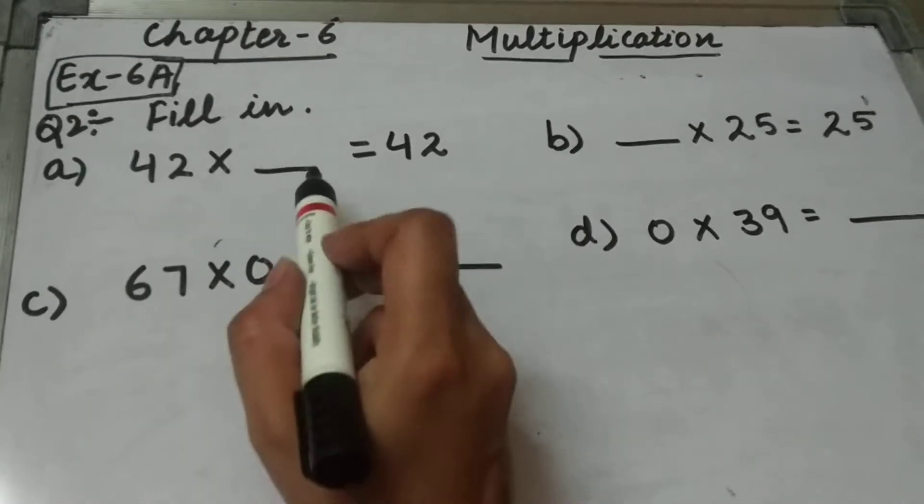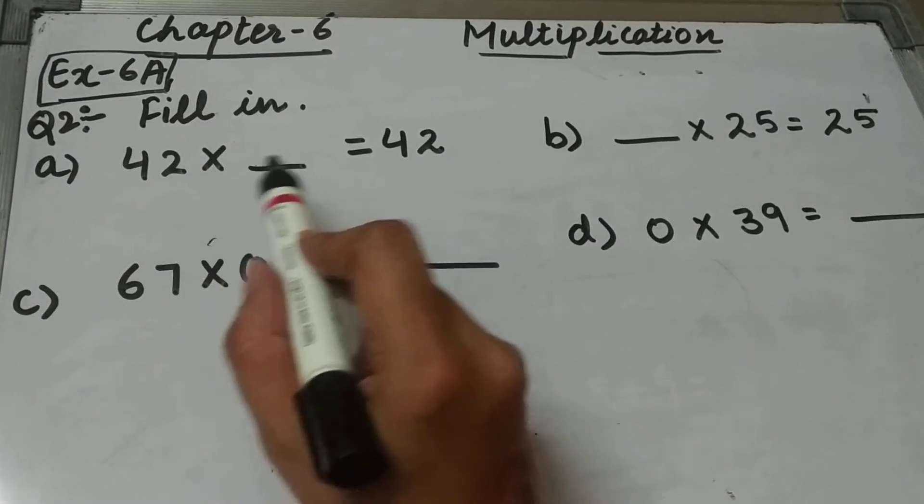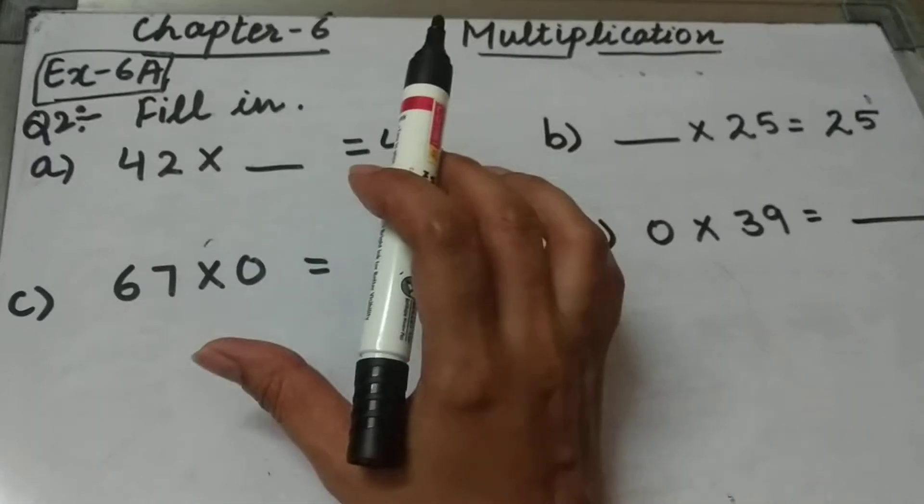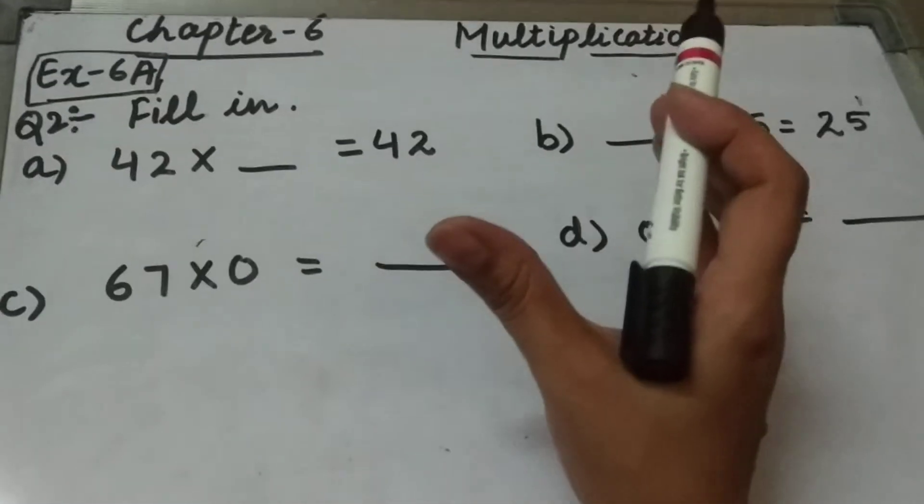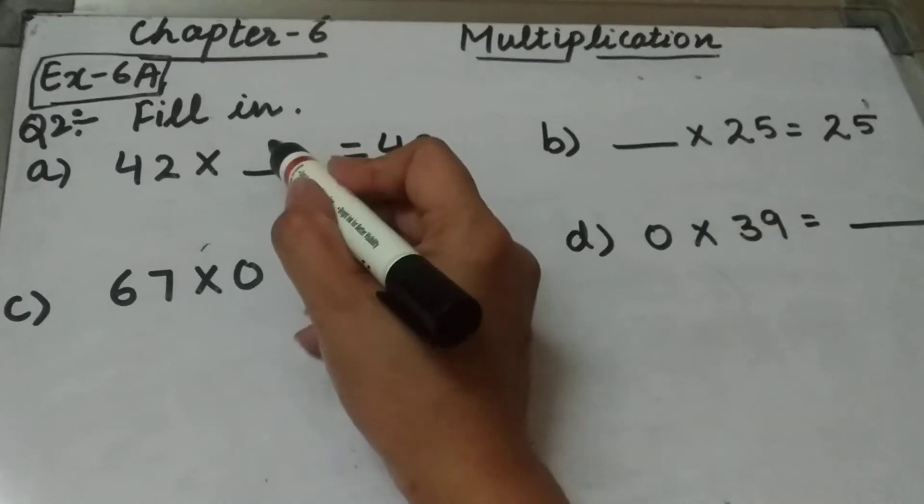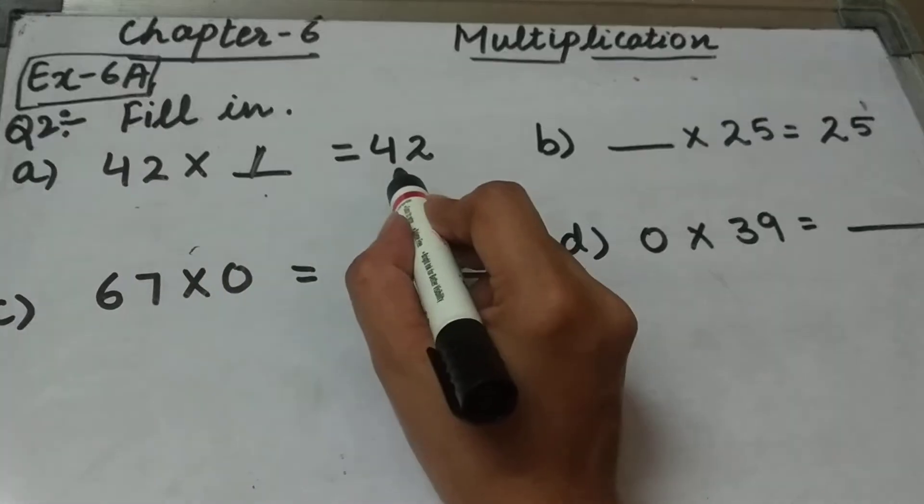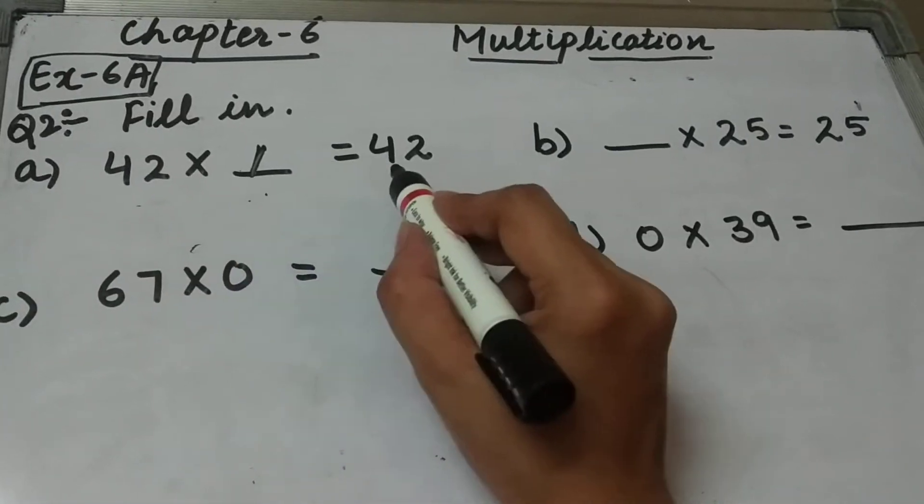By which number should I multiply 42 so that I get 42 again? If we multiply any number by 1, we get the number itself. So we will write 1 here. If I multiply 42 by 1, I will get 42. 42 ones are 42.